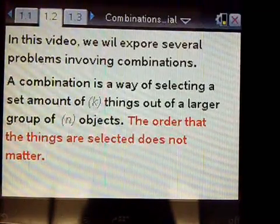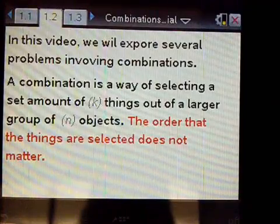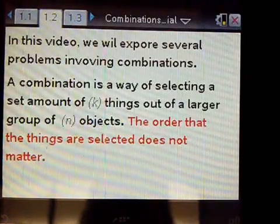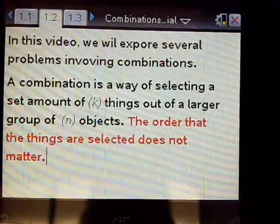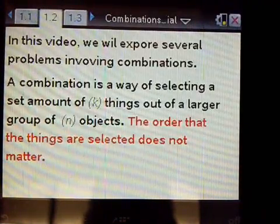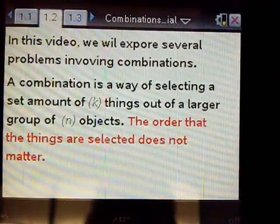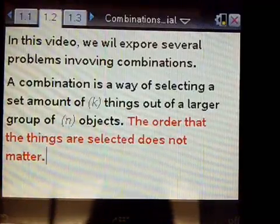A combination is a way of selecting a set amount of k things out of a larger group of n objects. The key here is that the order that the things are selected does not matter.